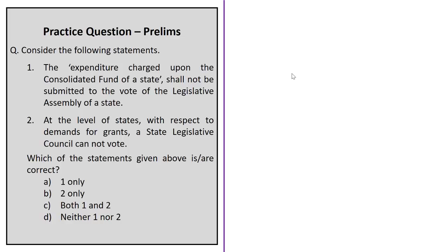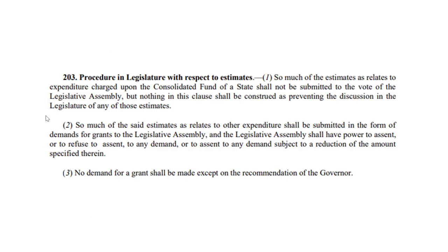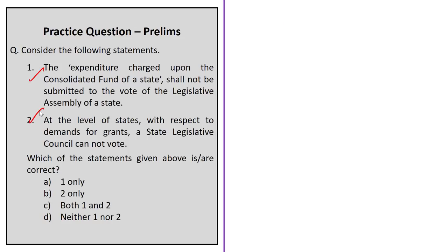Practice question one: Two statements are given. Statement 1: Expenditure charged upon the consolidated fund of a state shall not be submitted to the vote of the legislative assembly. Statement 2: At the level of states, a state legislative council cannot vote on demands for grants. Both statements are correct as per Article 203 of the Indian Constitution — voting on demands for grants is an exclusive privilege of the state legislative assembly. The correct answer is option C: both 1 and 2.